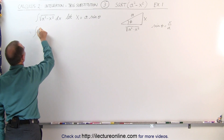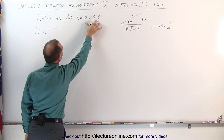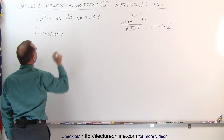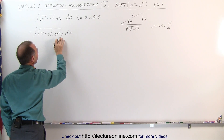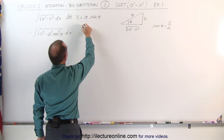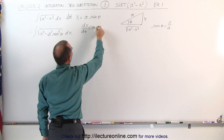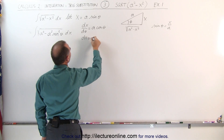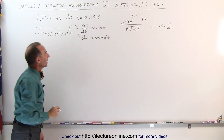The integral can now be written as the integral of the square root of a squared minus, instead of x squared, we write this quantity squared, which is a squared times the sine squared of theta. We can't forget the dx — if we're going to have theta in the integral, we need to replace dx. So we find the derivative: dx/dθ equals a times the cosine of theta, which gives us dx equals a times the cosine of theta dθ. We then substitute that in for dx as well.